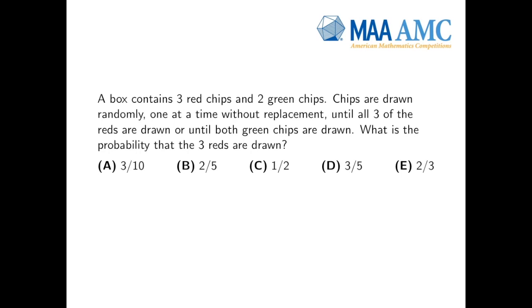Just a quick reminder of probability. The probability, P, of something happening is the number of ways in which it can happen - the number of favorable outcomes divided by the number of all possible outcomes.